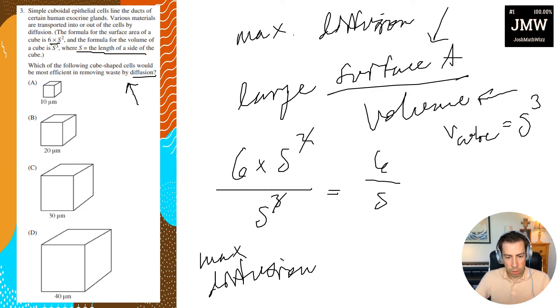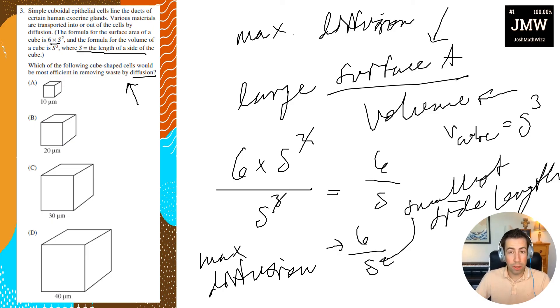...the answer choice with the smallest side length. Because with a fraction, if I have a large denominator, then I get a small number. So I want a small denominator so that I get a large number.